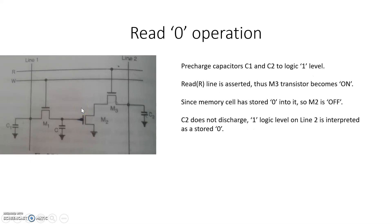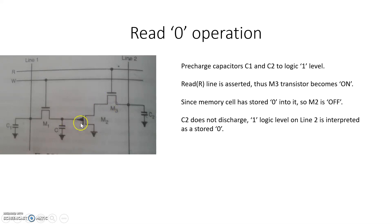For the read-zero operation, we again pre-charge line 1 and line 2 to Vdd. We activate the R line, turning on M3. If a zero bit is stored, the voltage at the cell capacitor is zero, so M2 is off. With M2 off, the voltage on line 2 remains constant, which is interpreted as a stored zero. In this way, all read-one, read-zero, write-one, and write-zero operations of the single-transistor and three-transistor dynamic RAM are performed.